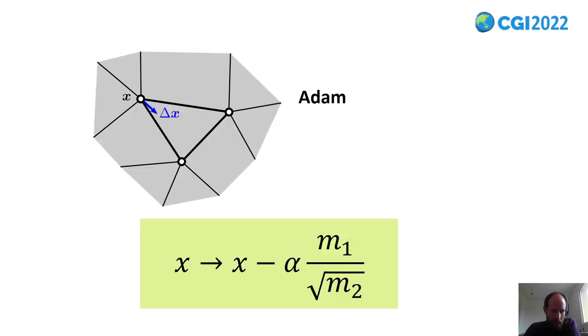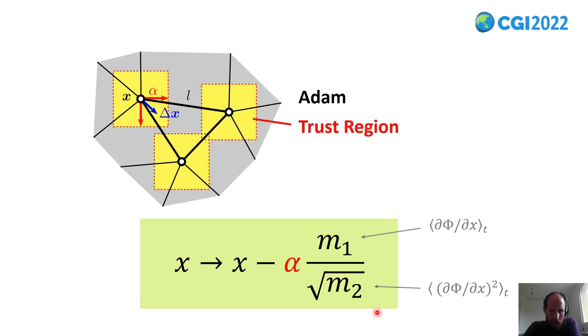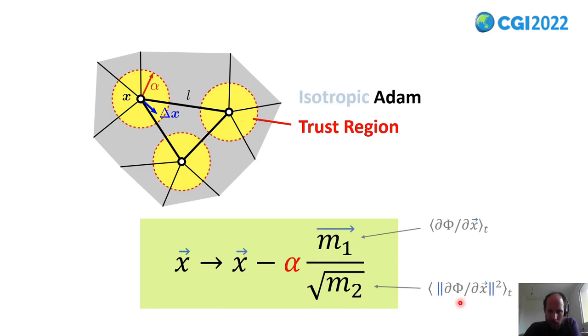So my idea was could we take the vertex speed from the Adam optimizer and calculate the triangle size. Turned out no, it's not that easy. This is why. The Adam optimizer has this well-known update rule with the first and second order moments, and alpha is a constant with the step size or often called learning rate. And alpha defines the size of the trust region around the vertices. We can trust that the vertices move only inside of these regions in one step. And when these regions are not overlapping then we can trust that we don't get flipped triangles.